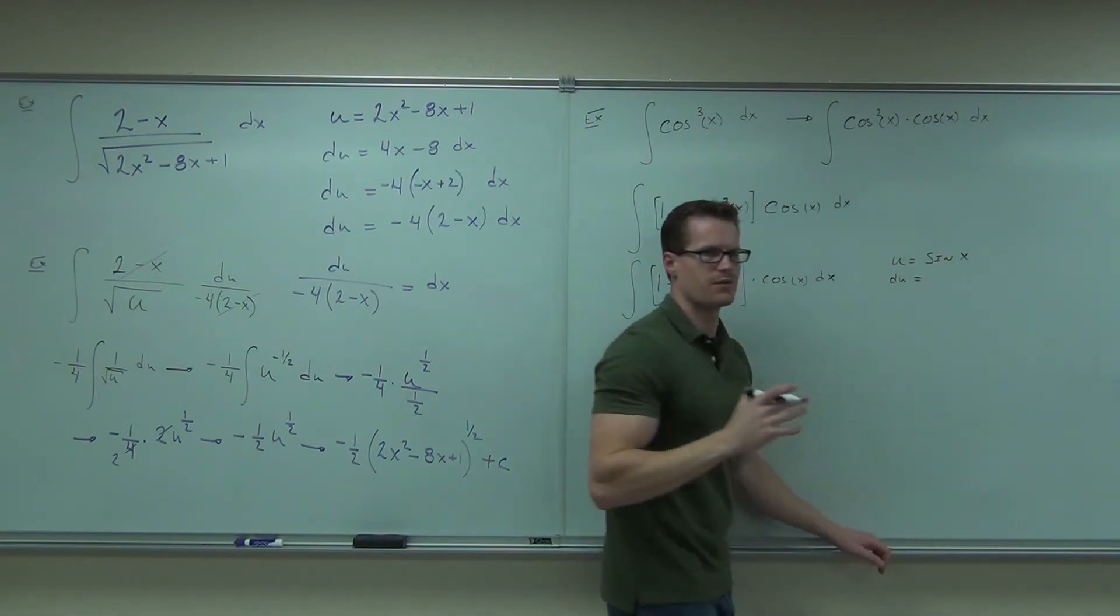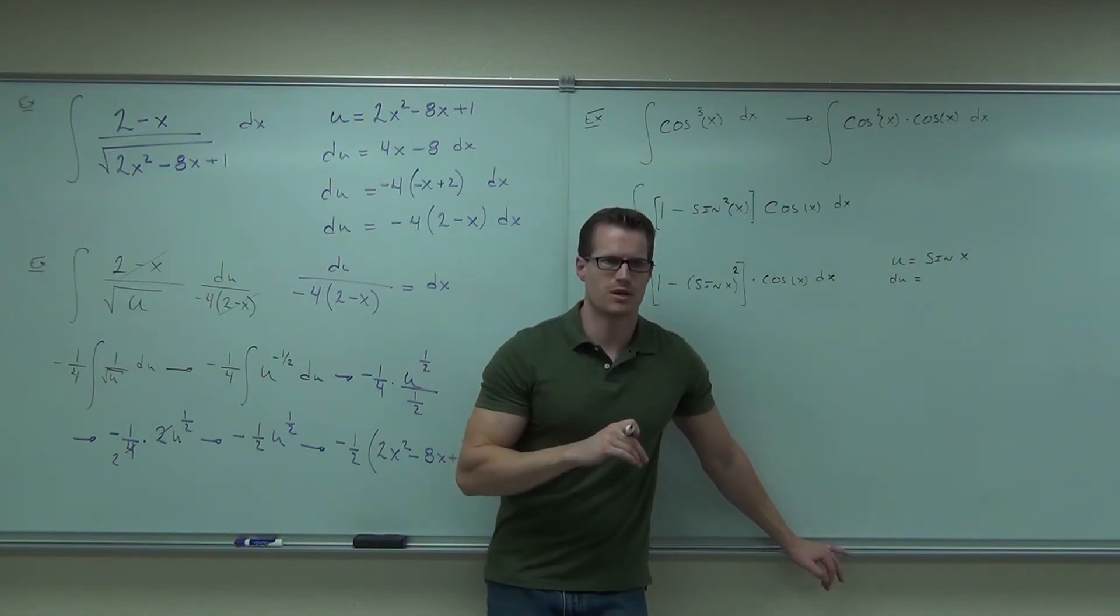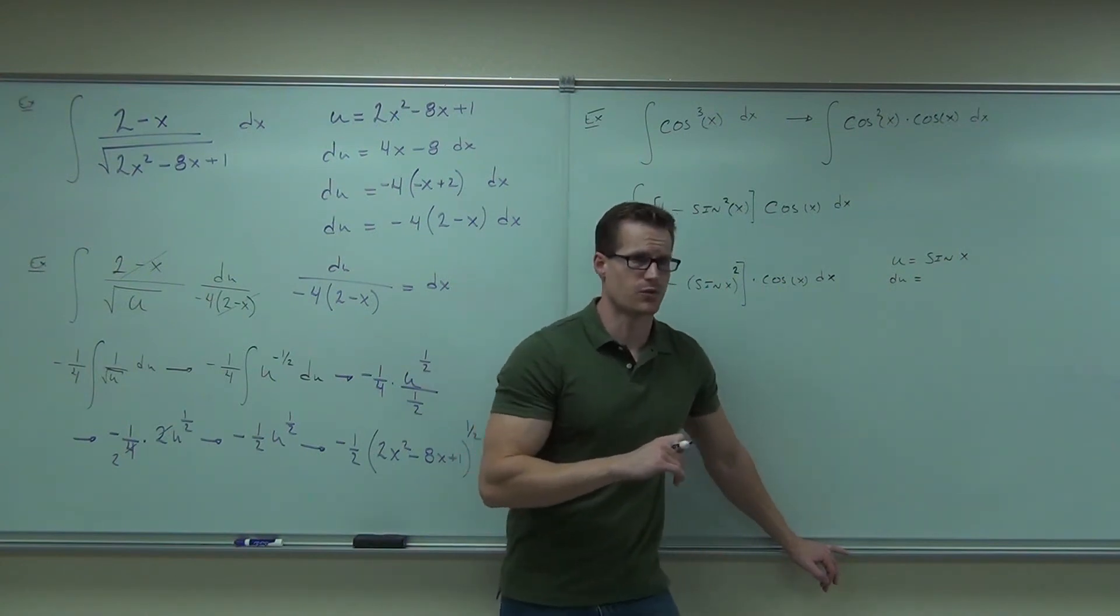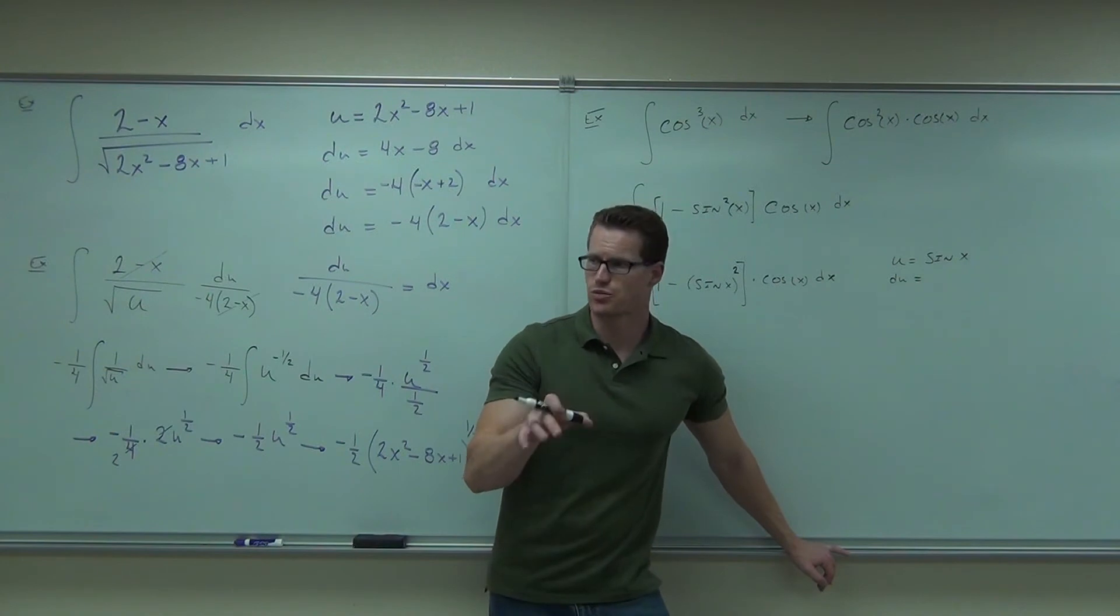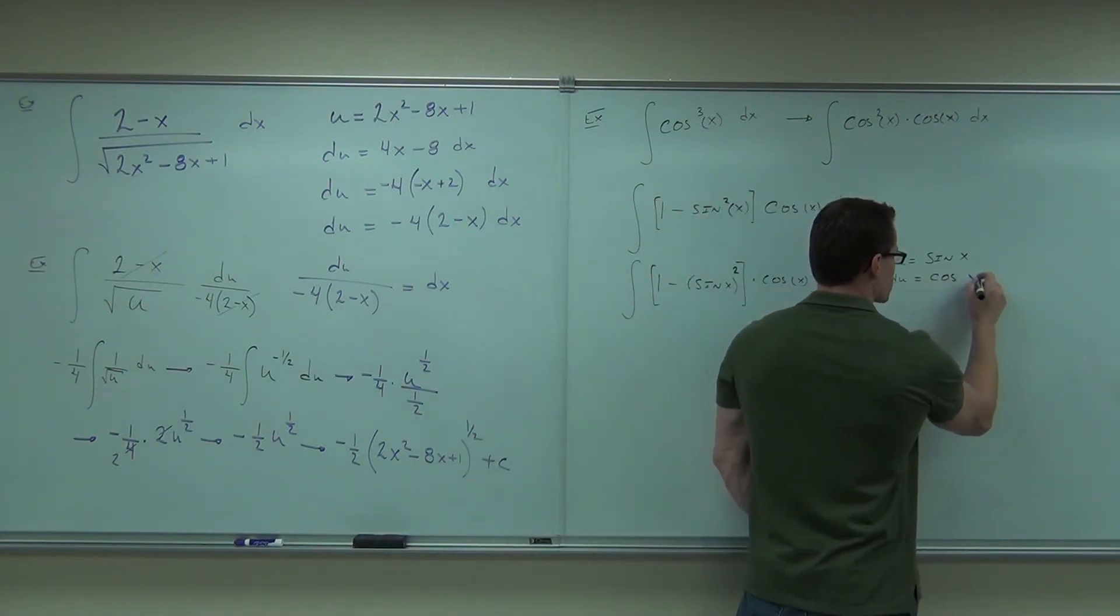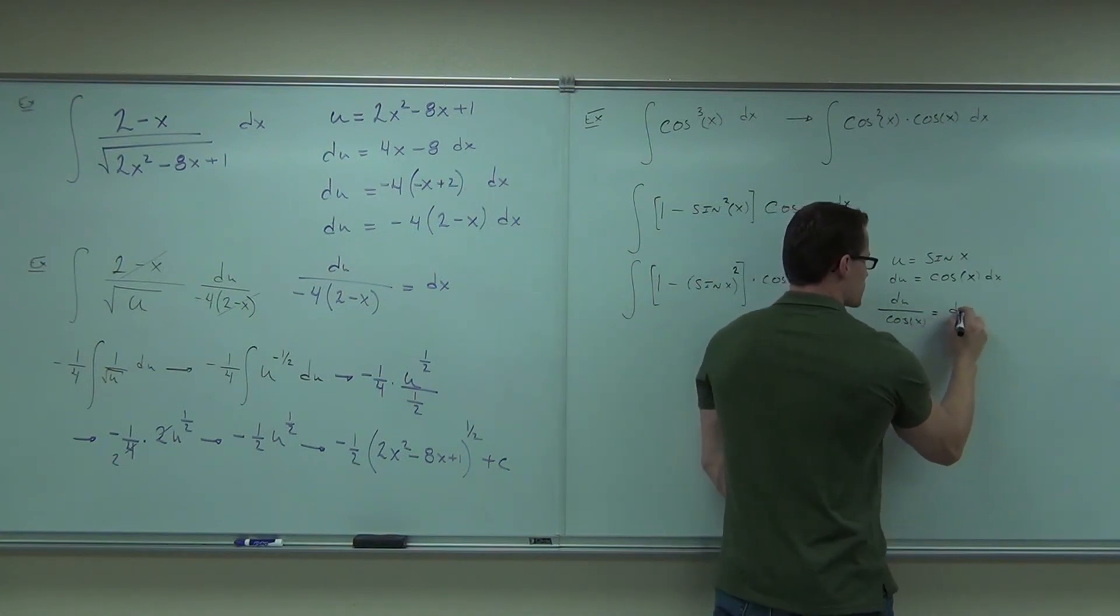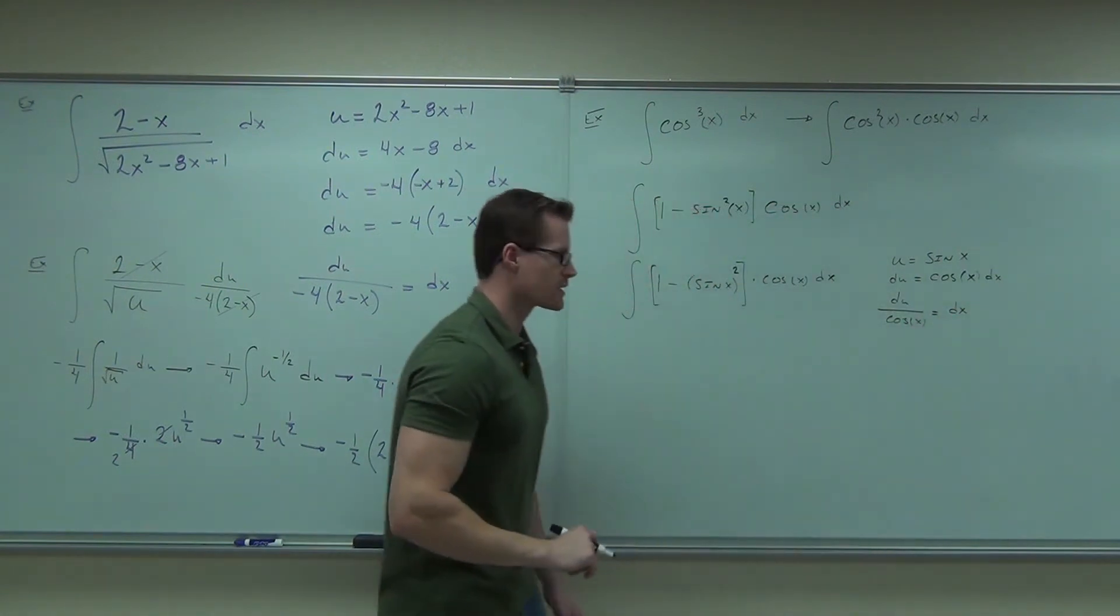What is the derivative of sine x? Is it positive or negative cosine? Positive. I still have some people giving me negatives. Be careful in what you're doing. Integrals versus derivatives. This is a derivative. Derivative of sine x is positive cosine x dx. When you divide by cosine, you get du over cosine x equals dx. Hey, we're almost good to go.